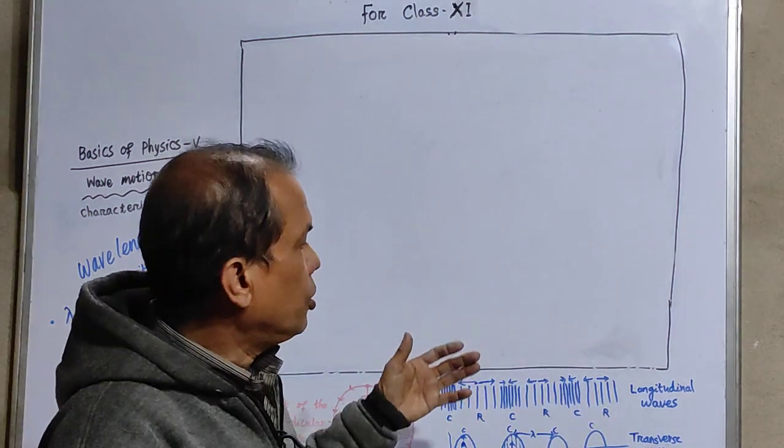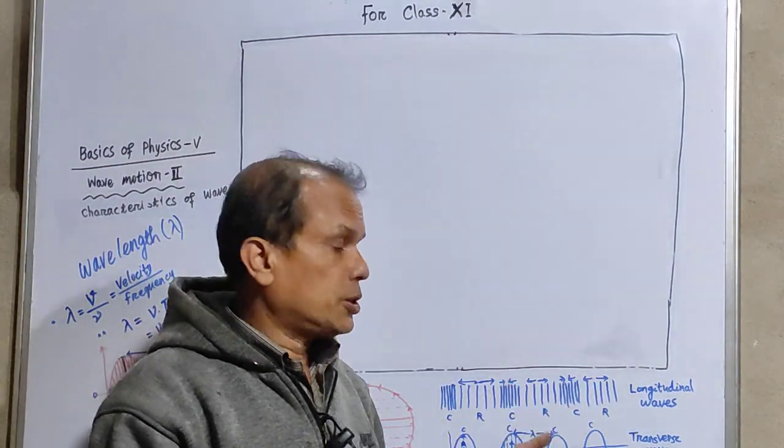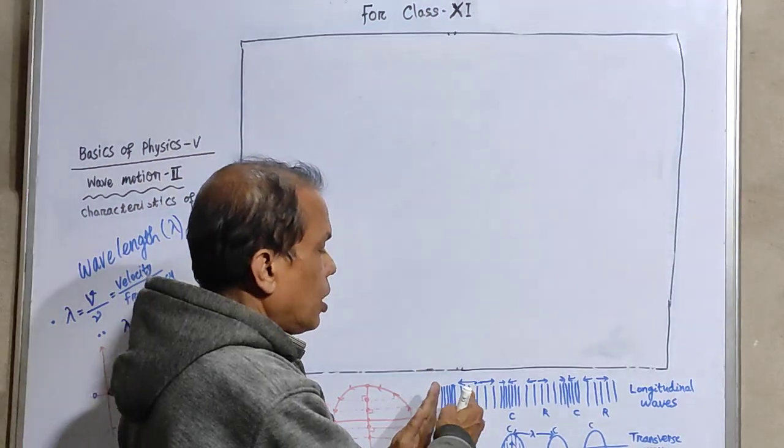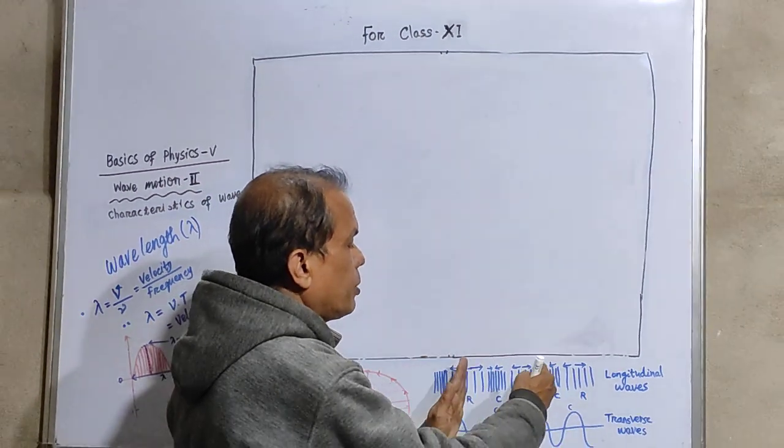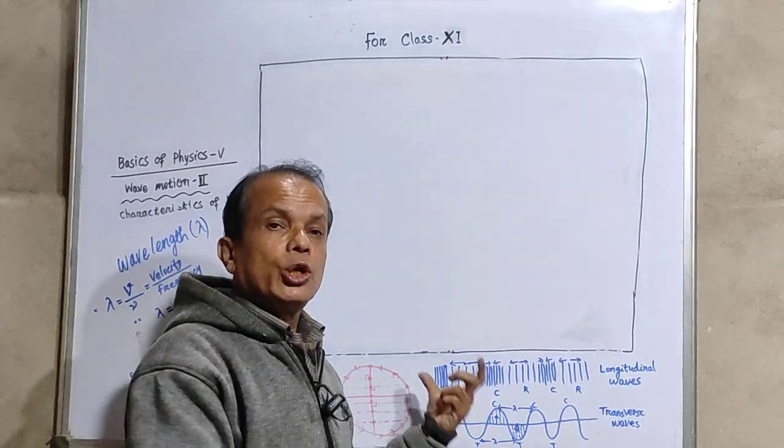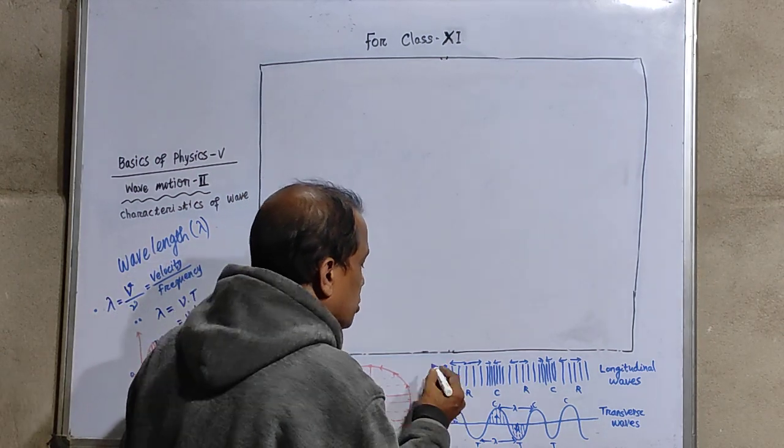If we consider the two kinds of waves, the transverse waves and the longitudinal waves, we can see the compression and rarefaction in which we find equivalent points, equivalent positions. Here there is a compression, take the center, say, this one.